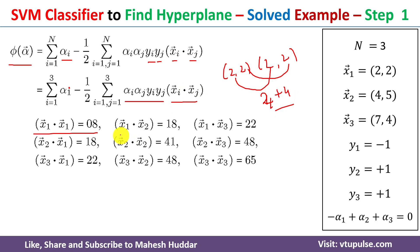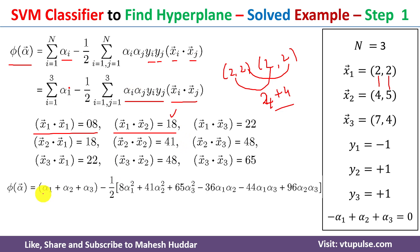Continuing all combinations — for i = 1, j = 2 we got 18 as shown. After computing all possible dot product combinations and substituting the values, we get the full equation: φ(α) = α1 + α2 + α3 − (1/2)(8α1² + 41α2² + 65α3² + ...).